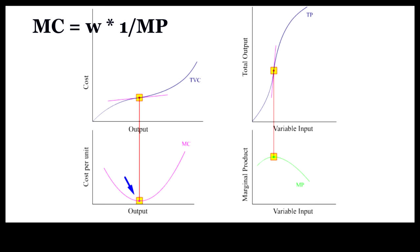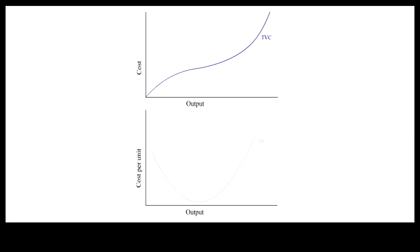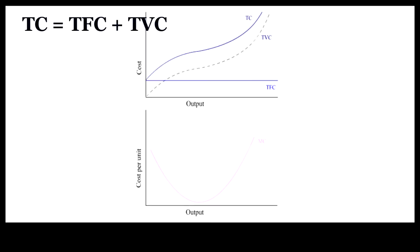When the cost of fixed inputs is added, TVC is simply shifted up by the same amount over the whole range of output. The result is therefore total cost, TC, which is the sum of total fixed cost, TFC, and total variable cost, TVC.